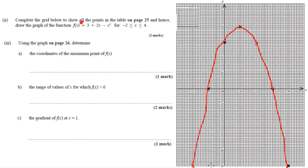We want to find the coordinates of the maximum point of f(x). The maximum point is where the graph is the highest — we also call this the vertex. The vertex here is at x equals one and y equals four, so the coordinate of the maximum point is (1, 4).